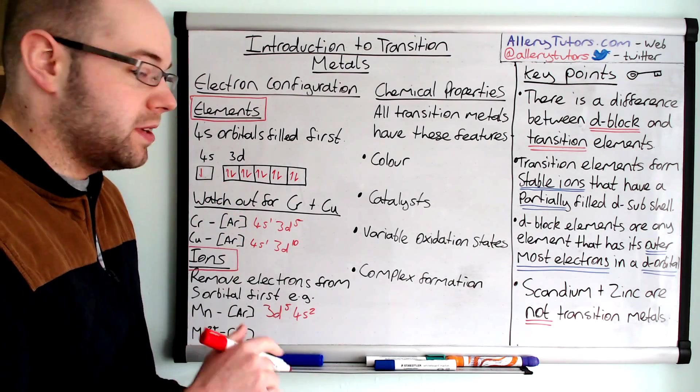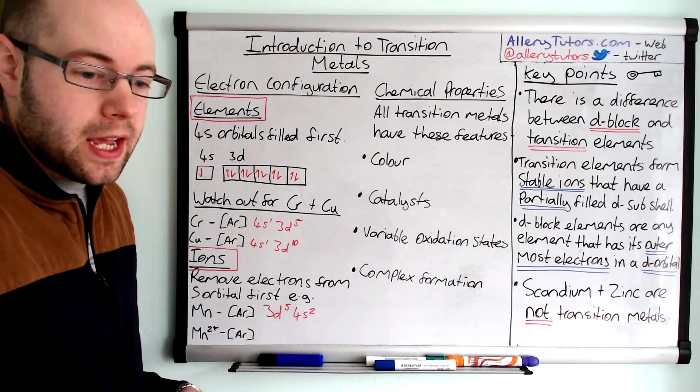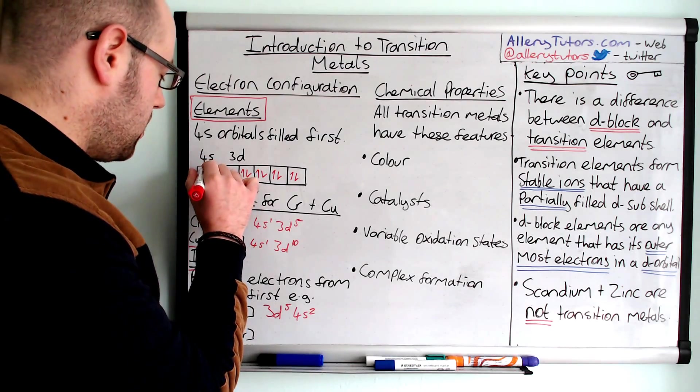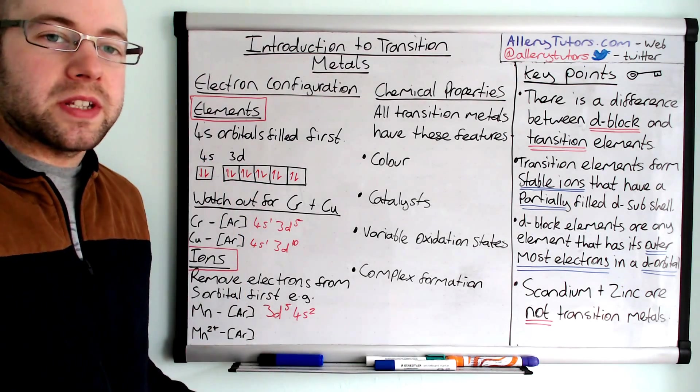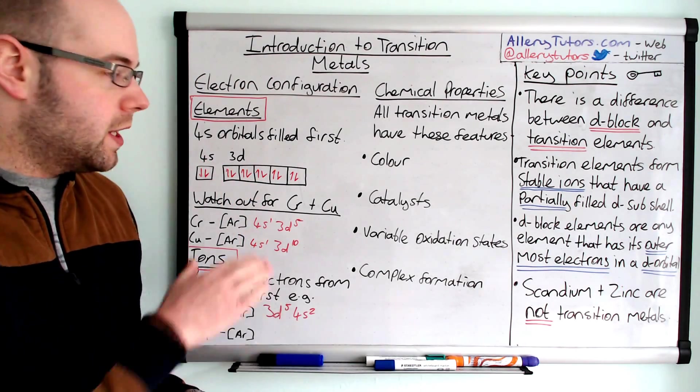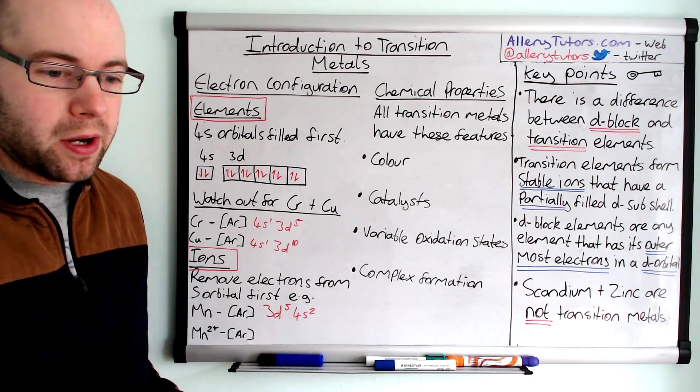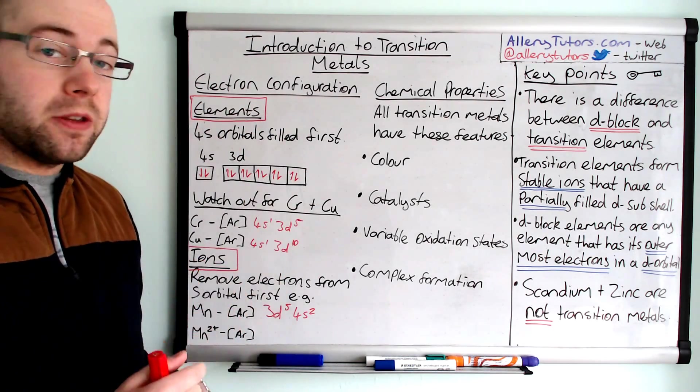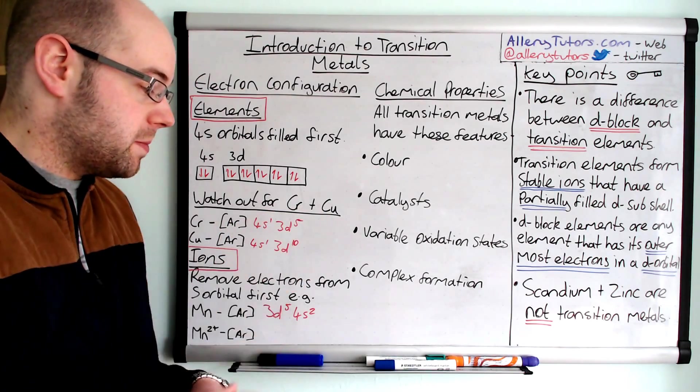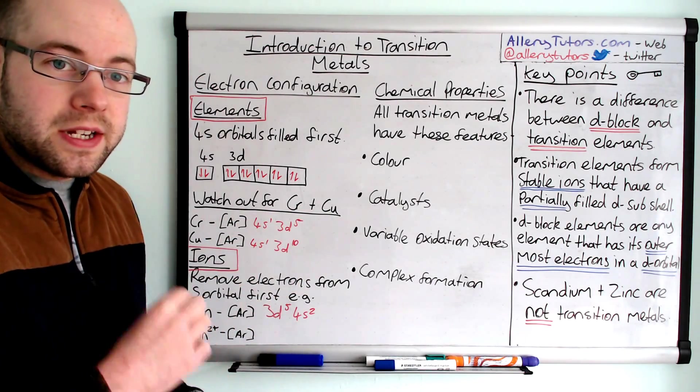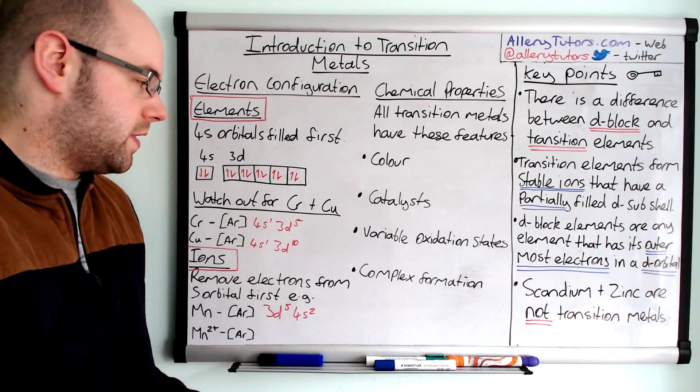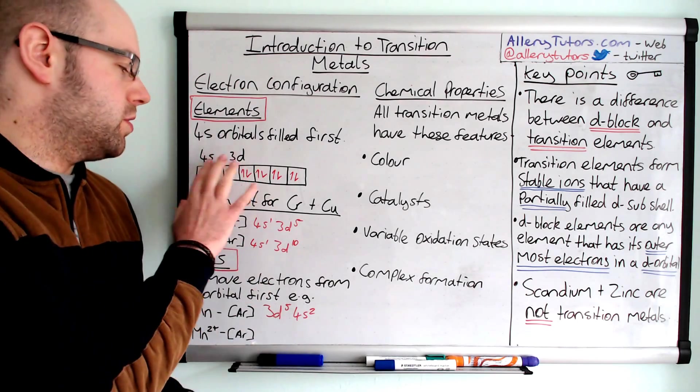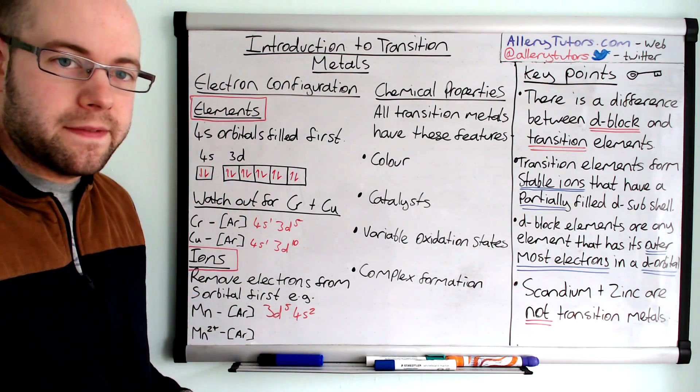And if we come on to the last one, the last one there was zinc. That's the last element after copper. The electron for zinc will go into that s orbital and then it's full. And after this, we then go into the p block, which would be gallium. So that's effectively how we fill them out. But you do have to watch out for chromium and copper as these do have this different electron configuration to the standard one. All the other elements have two electrons in the 4s orbital.